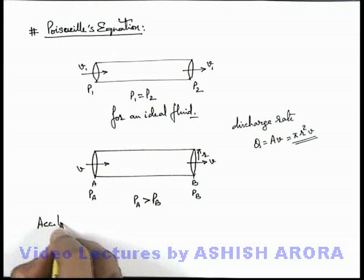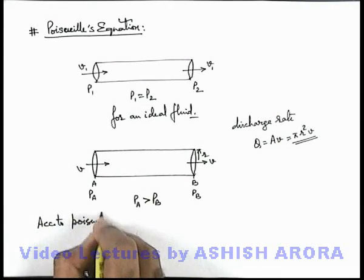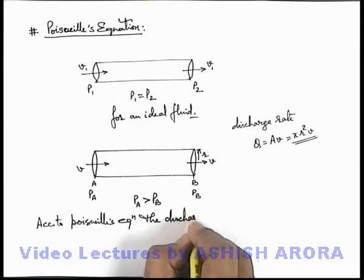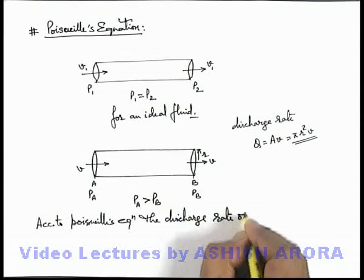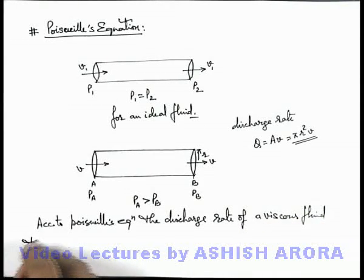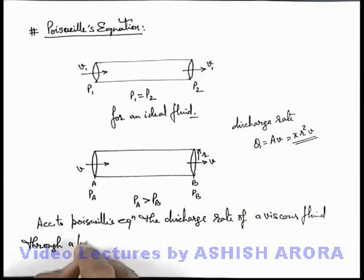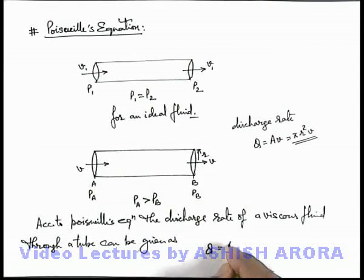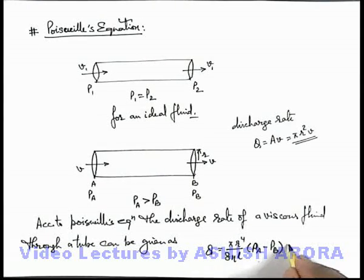Here we can say according to Poiseuille's equation, the discharge rate of a viscous fluid through a tube can be given as Q is equal to πr⁴/(8ηL) times (pA - pB), that is the pressure difference, which is written as πr⁴/(8ηL) times the pressure difference across the tube.